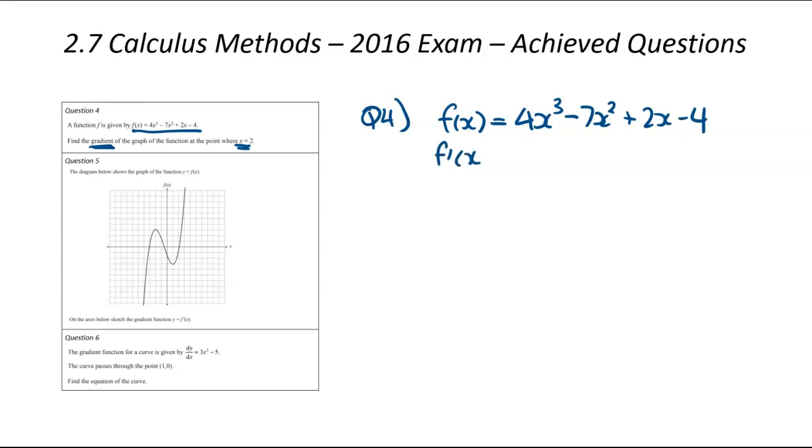We now need to differentiate. So we're looking for f dash x, or the gradient function. We're going to go 4 times 3 gets us to 12, and reduce the power by 1. And then we've got 7 times 2, which is 14, reduce the power by 1. So that becomes 1 by itself. That's invisible. We can get rid of that.